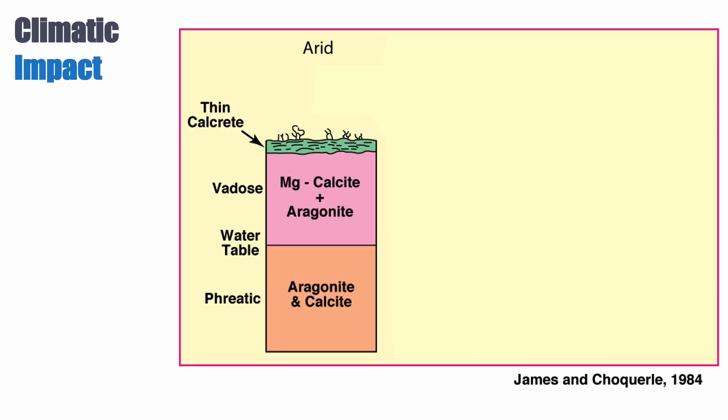What controls this is climate, so let's look at what can happen in different climatic regimes. If you are in an arid environment, looking specifically at carbonate successions, you basically form a thin calcrete at the top of your sediment — a thin soil with very little cement. In the vadose zone, because you don't have a lot of water, you preserve both magnesium calcite and aragonite, which are very delicate minerals. Whereas in the phreatic zone below the water table, only aragonite and calcite are preserved, but aragonite is preserved.